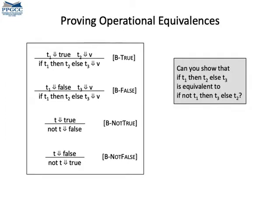We call them like this because each rule shows the meaning of terms up to a value. That is, the rules show which value is produced for each term. This kind of approach simplifies a few proofs. For instance, can you prove that if t1 then t2 else t3 is equivalent to if not t1 then t3 else t2?